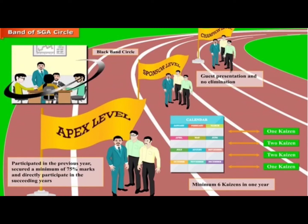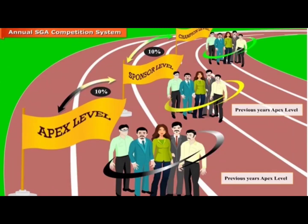All green band SGA circles enter the champion level competition. For every 10 participating SGA circles, one circle is nominated to the higher level, that is the sponsor level competition. All green band SGA circles nominated, along with yellow band SGA circles from the previous year's apex level competition, participate at the sponsor level. 10% of the participating circles, rounded up, are nominated to the apex level competition.